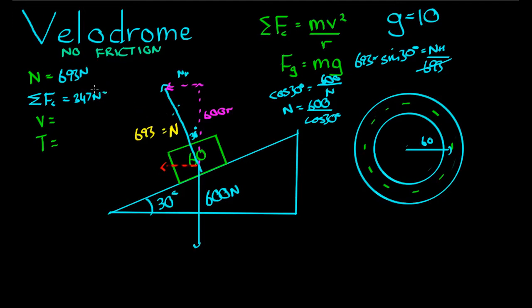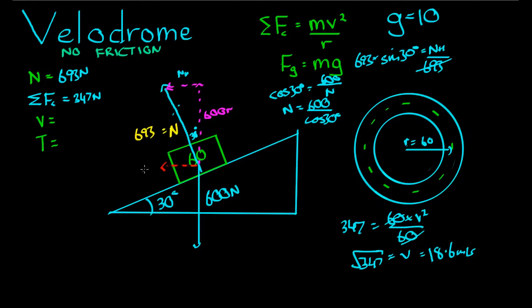Now we're getting somewhere. We have a normal force of 693, a centripetal force of 347, and we want to find v. We know r equals 60, we know m is 60, we know the net centripetal force. We're trying to find v. So we have 347 equals m which is 60 times v squared over r which is 60. We can actually cancel that down. So v squared equals 347. The square root of 347 equals v, which is 18.6 meters per second. So the speed this cyclist is traveling at is 18.6.